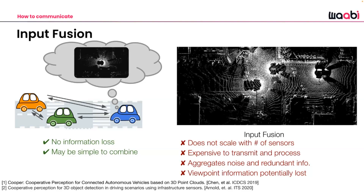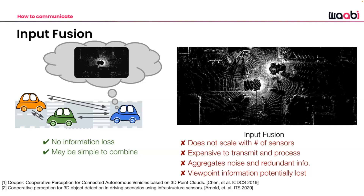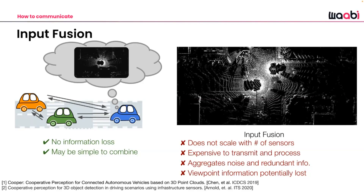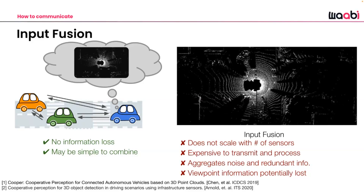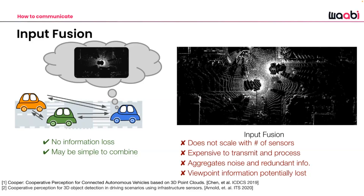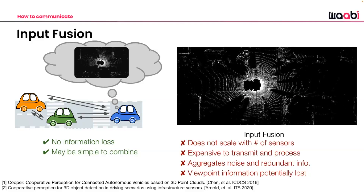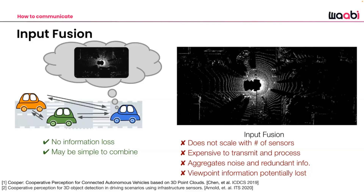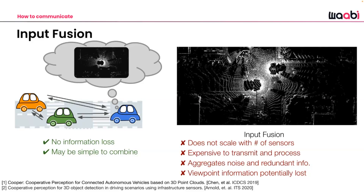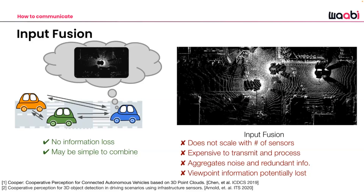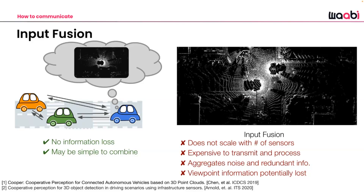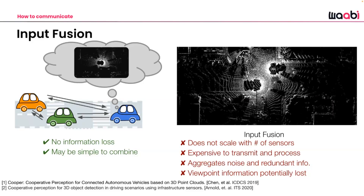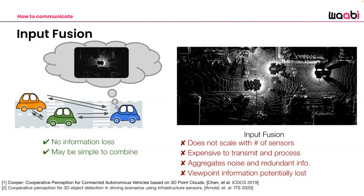For point cloud data or data with an explicit 3D representation, you can easily transform into a shared coordinate frame and run standard perception models. The benefit of input fusion is you're sending all the data available from vehicles or infrastructure in the network, and it's straightforward to combine lidar data. The disadvantage is that it places much more computation burden on a single autonomy system and vehicle platform to process all that additional data.